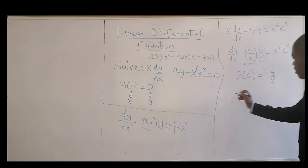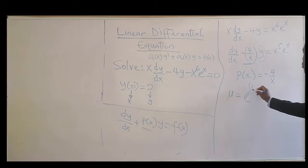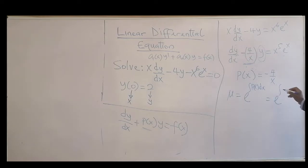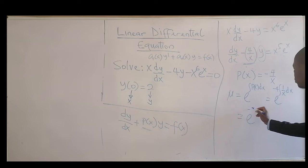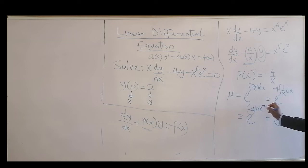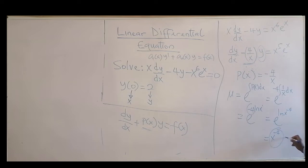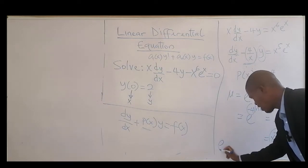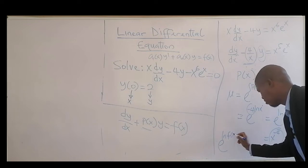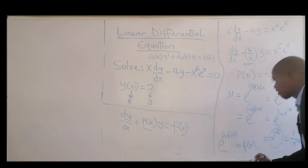Now let's find the integrating factor. μ = e^(∫P(x)dx) = e^(∫(-4/x)dx) = e^(-4 ln x) = e^(ln x^(-4)) = x^(-4), which is 1/x⁴. Recall that e^(ln f(x)) = f(x).